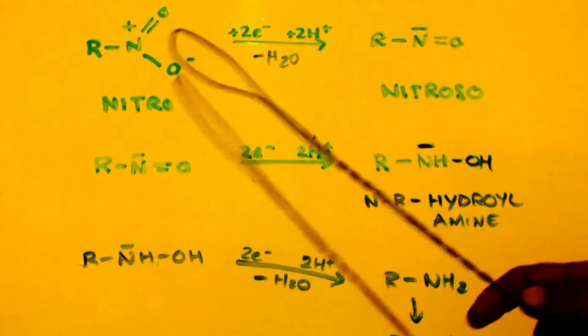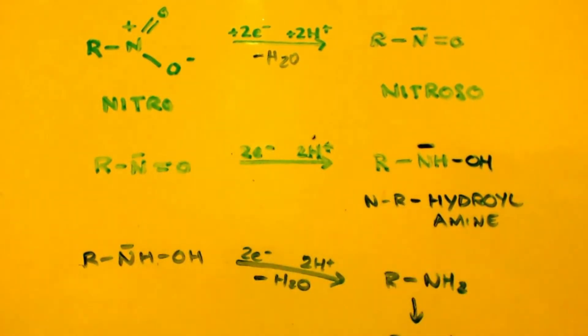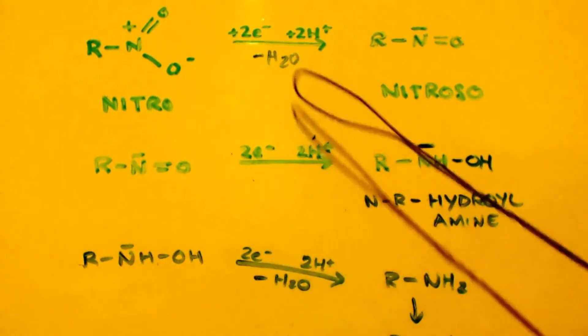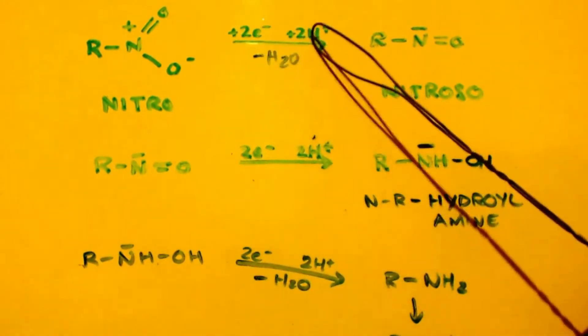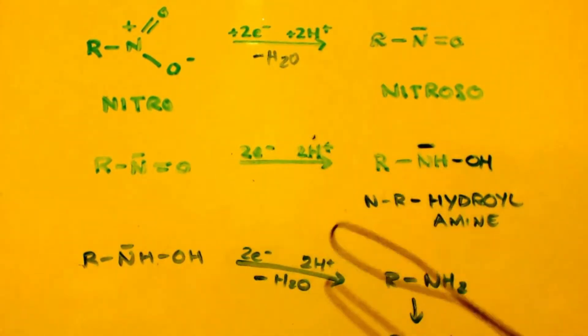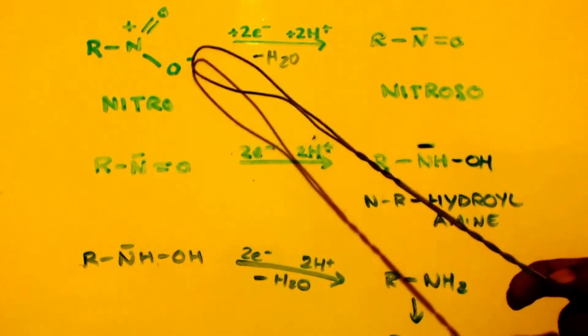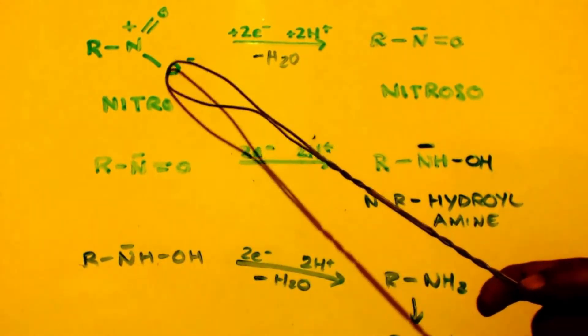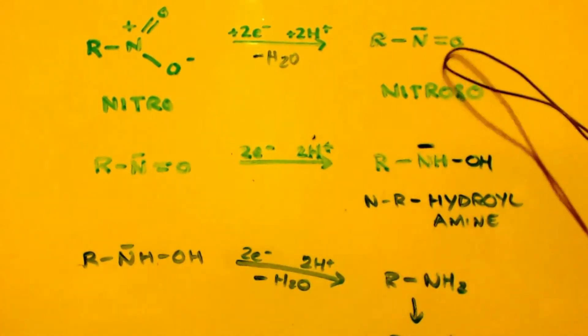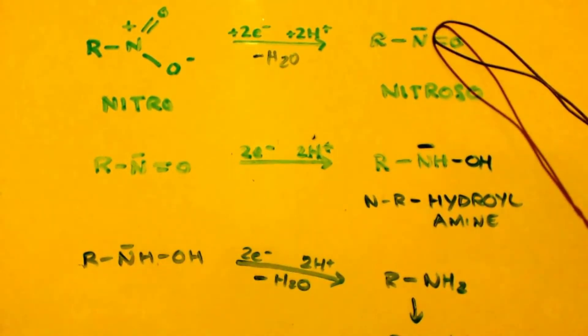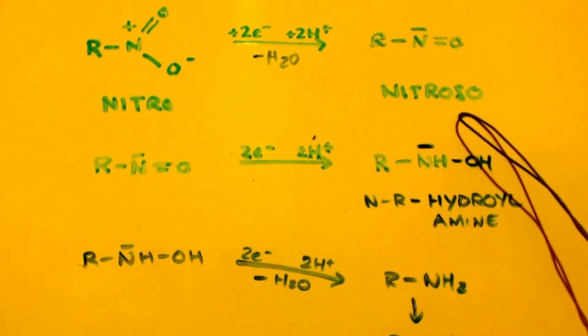So anyways, you got your nitro group. The R would be a methyl group in our case. And you're going to add two electrons and two protons and remove a water. You're going to add two protons here and this is going to come off and you wind up with this. Now, instead of it being positive, it's negative. And that's called a nitroso group.